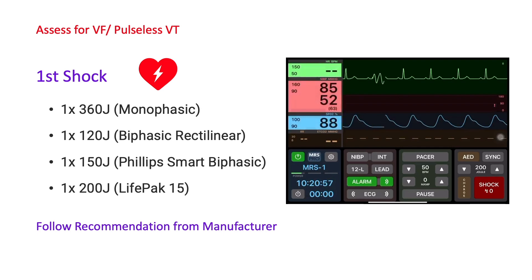Follow the recommendation on the dual settings from the manufacturer. For a monophasic device, use 360 joules. For a ZOLL device with a biphasic rectilinear waveform, the first shock is at 120 joules. For a Philips SMART Biphasic device, use 150 joules. For a device like the LifePak 15, it will be at 200 joules. Always follow the recommendation from the manufacturer.